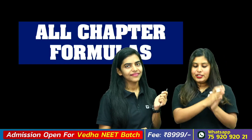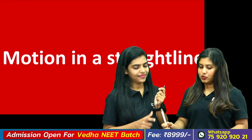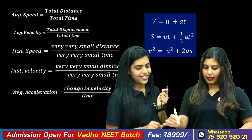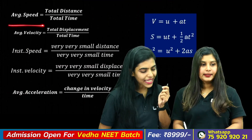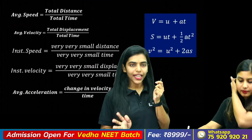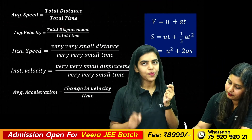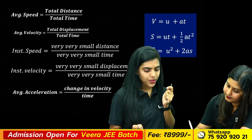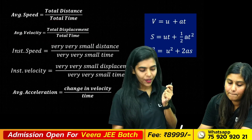We will learn motion in a straight line. For average speed, the formula is total distance by total time. For average velocity, it is total displacement by total time.